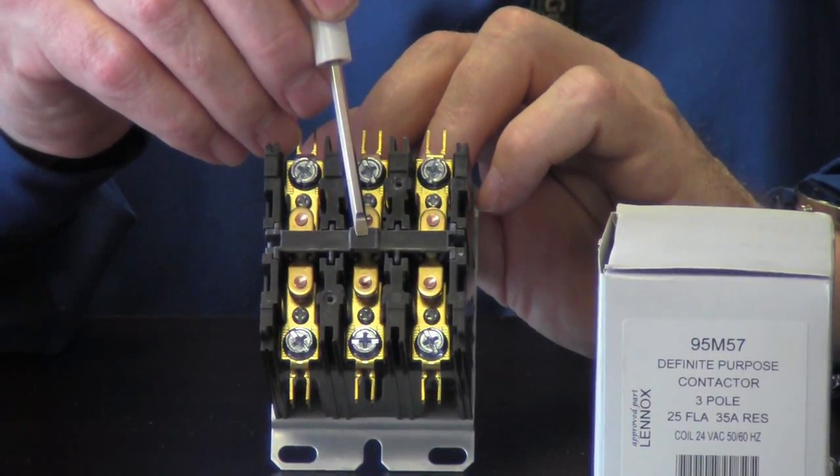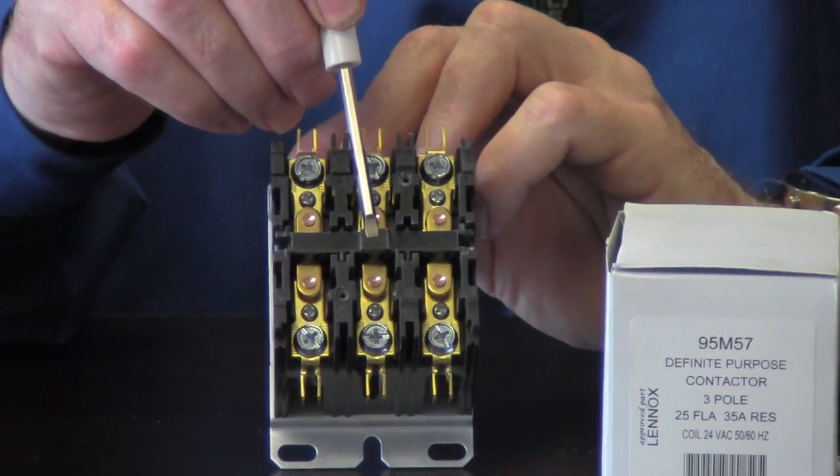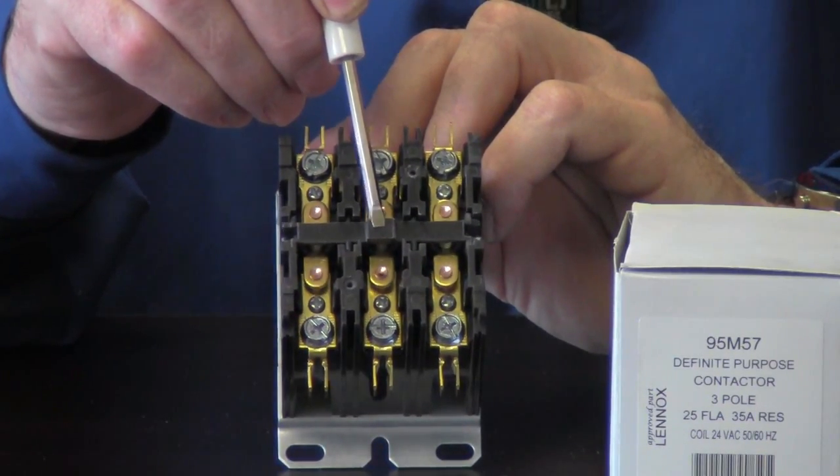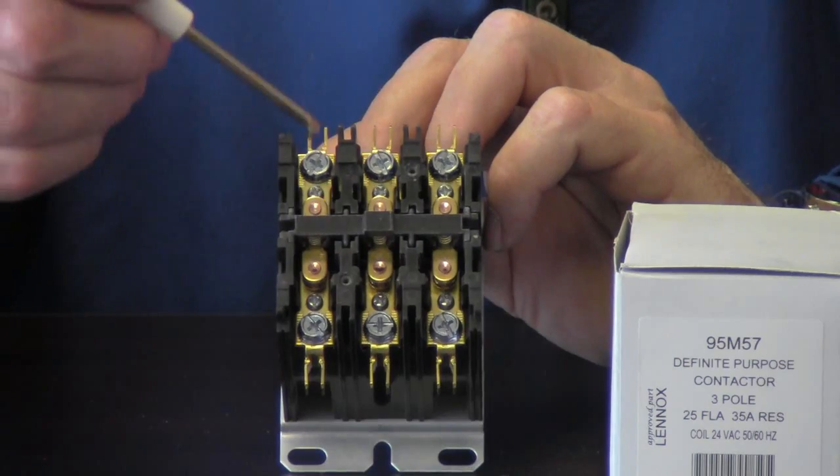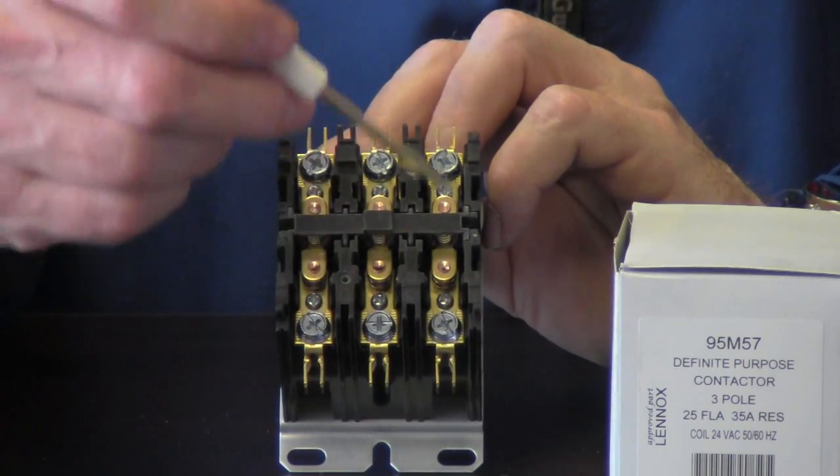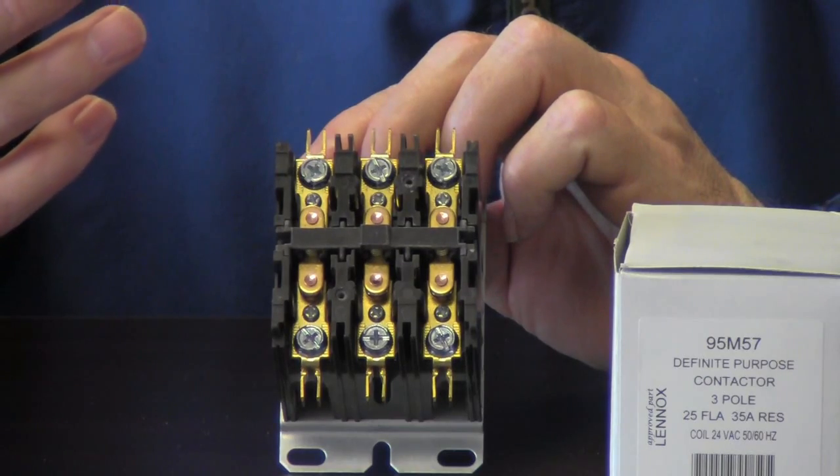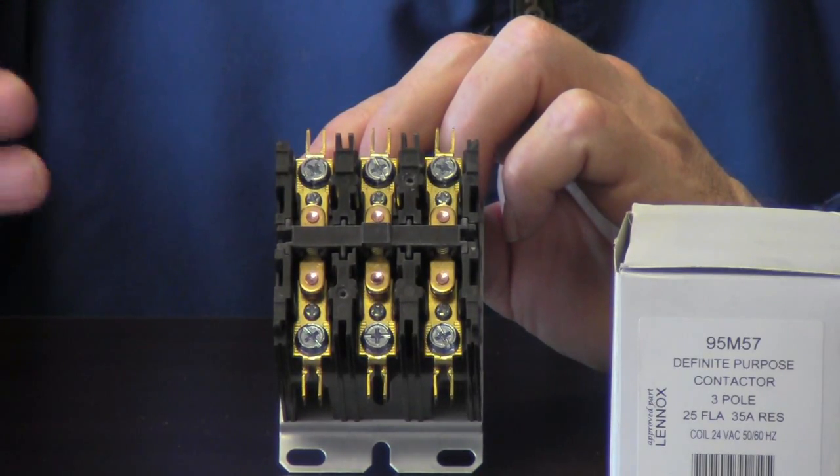So once power is put to it, this will come down and once that's down like so, then our power is able to pass up through and go to our load. In this case our load would be like our compressor or our condenser fan motor.